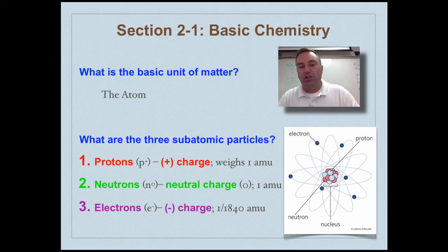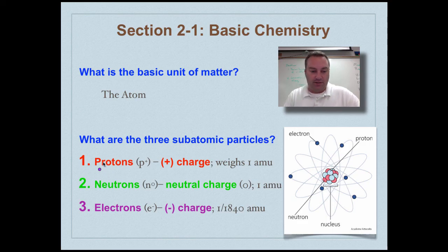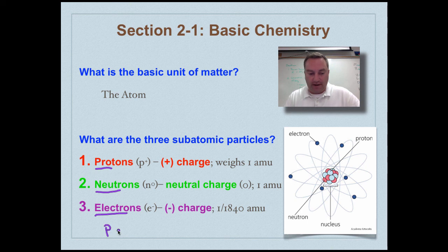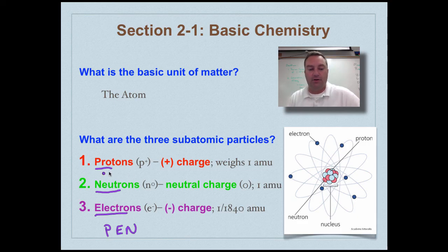Now the atom has three main subatomic particles listed right down here: protons, neutrons, and electrons. You could remember them with an acronym like this: PEN. So think of atomic PEN - protons, electrons, and neutrons.